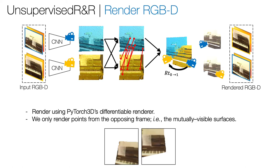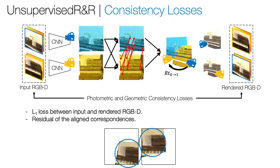Finally, we render the aligned point clouds using PyTorch3D's differentiable renderer. We found that only rendering the points from the opposing frame allows us to achieve better registration performance by rendering the mutually visible surfaces of the scene. We train our model using two losses: an L1 loss applied between the input and rendered frames on the rendered mutually visible portions, and a second loss applied to the residual error of the aligned correspondences.